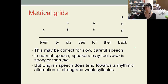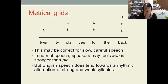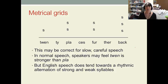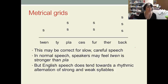Analyzing speech this way enables us to show the different levels of stress. Looking at the metrical grid for 'twenty places further back', that's assuming the utterance is produced with no prior context. It's possible to put stronger stresses on other syllables. For example, if somebody said 'did you say ten places further back?' then I might say 'no, I said twenty places further back.' So clearly 'twen' is the strongest stress there, and that would need to be indicated in the tree diagram and metrical grid. What we do know is that English likes to have an alternation of strong and weak syllables, and the reference accent tries very hard to preserve that pattern.